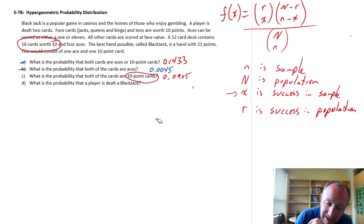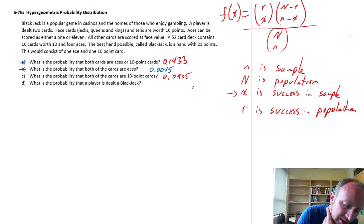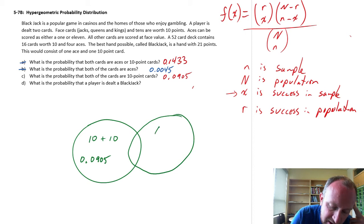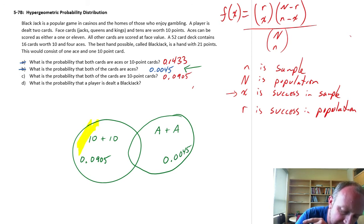So what we have, what we've already calculated, we can actually describe this in a Venn diagram, which of course we've used Venn diagrams before in other problems. So let's say, here this represents the probability of two 10s. So a 10-point card and a 10-point card, we calculated that just now, is 0.0905. Then we have, over here, the probability of two aces, an ace and an ace. And in part B, we calculated that probability is 0.0045. Now in part A, we calculated the probability that both cards are aces or 10-point cards. So what we've calculated there, is really the union of these two events. So two 10s or two aces.